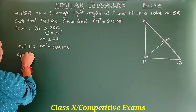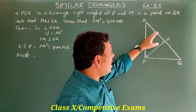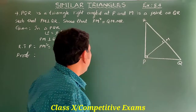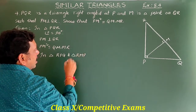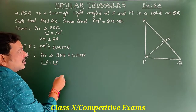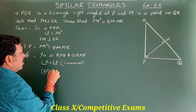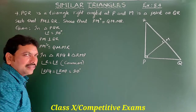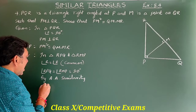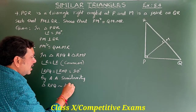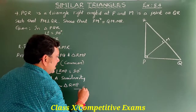Proof: In triangle RPQ and triangle RMP, angle R is equal to angle R — this is the common angle for both triangles. Also, angle RPQ is equal to angle RMP, both equal to 90 degrees. By AA similarity, triangle RPQ is similar to triangle RMP. Take this as equation number one.